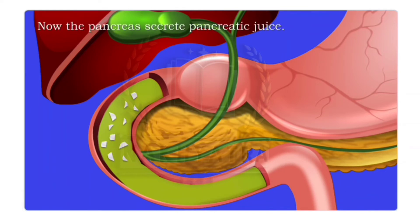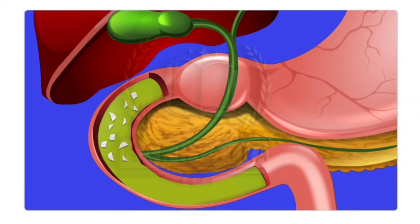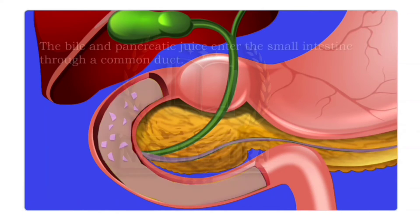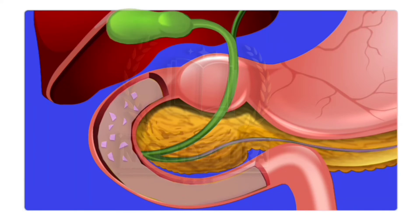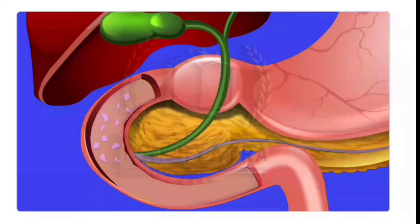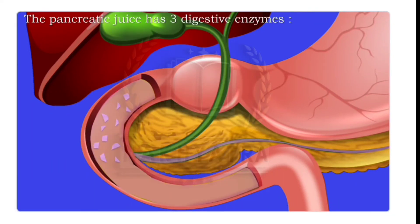The pancreas secretes pancreatic juice. The pancreas is present behind the stomach. The pancreatic juice and the bile both enter the small intestine through a common duct. The pancreatic juice contains three digestive enzymes.